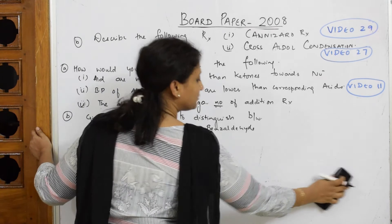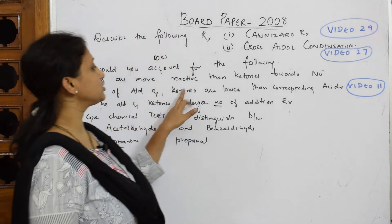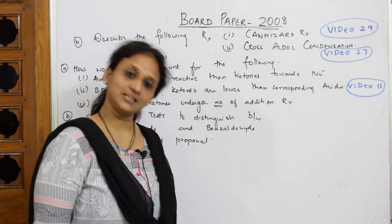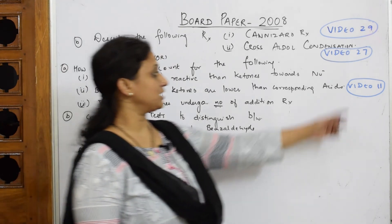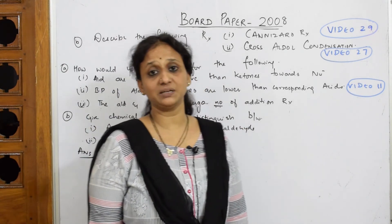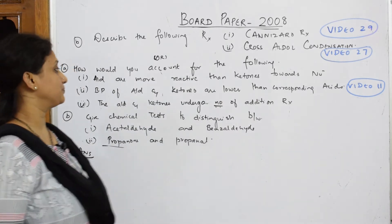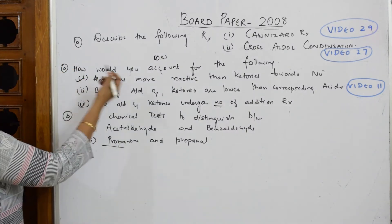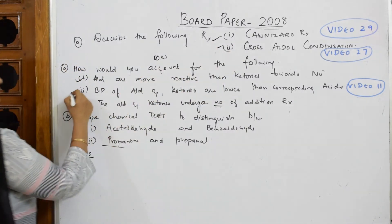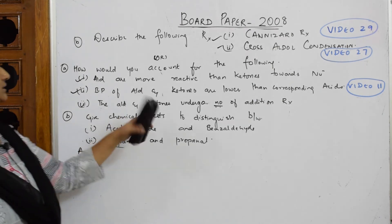Hope you would have read this question earlier. I've done this question earlier: boiling point of aldehydes and ketones are lower than corresponding acids. This video also was done under video number 11 in the playlist. Please go through that video.